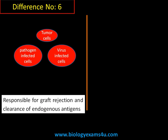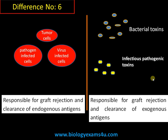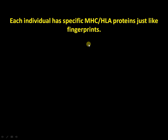Difference number six: MHC class 1 is responsible for graft rejection and clearance of endogenous antigens. Cytotoxic T cells clear infected cells by creating pores on the membrane using perforin, and digestive enzymes called granzymes ultimately eliminate these cells, protecting surrounding cells. MHC class 2 is responsible for graft rejection and clearance of exogenous antigens, such as bacterial toxins, viral toxins, and other infectious pathogenic toxins, in association with T helper cells.